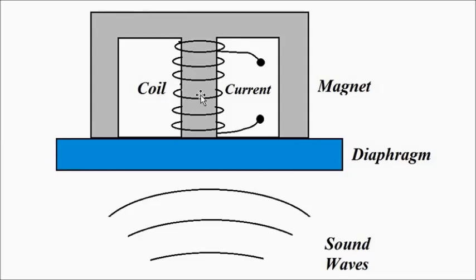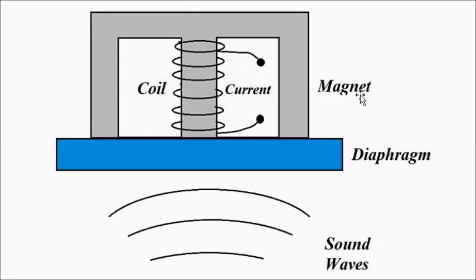The whole setup — the coil, core, magnet, and diaphragm — works as follows: the diaphragm moves to and fro because of the pressure generated by the sound waves. As a result of this movement in the magnetic field, a current flows through the coil. This current, which is the required electrical signal, is then fed to further signal processing circuitry. So here, sound waves — which are non-electrical — are converted into current signals, which are electrical. This is the basic principle of a microphone.